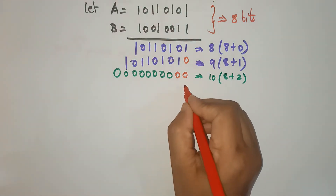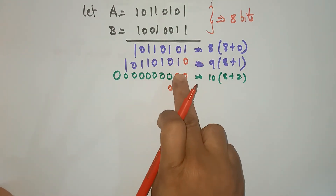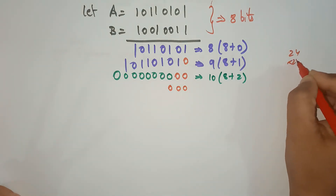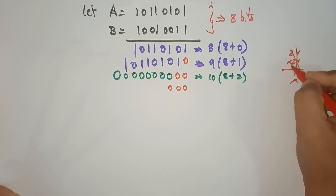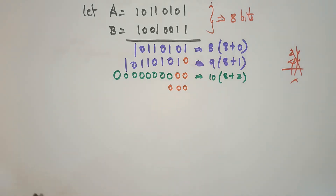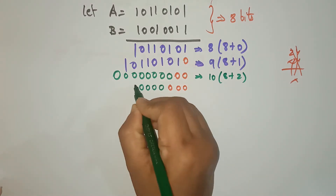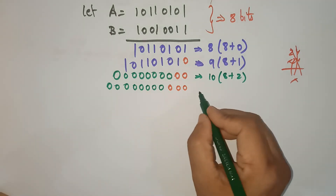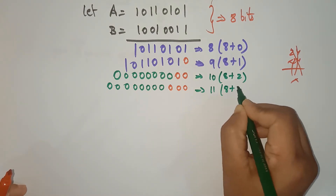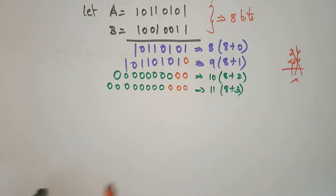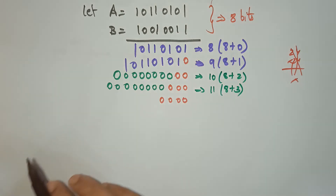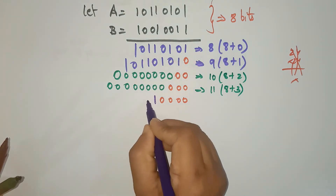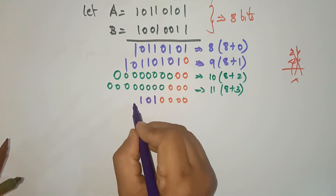When the zeros are there, when you are trying to multiply with zero, you get all zeros. So for a zero bit, place all zeros shifted to the appropriate position. Each successive partial product is shifted one more bit to the left. When you multiply with 1, you get the same A value; when you multiply with 0, you get all zeros. The bit widths grow: 8, 9, 10, 11, 12 bits and so on.